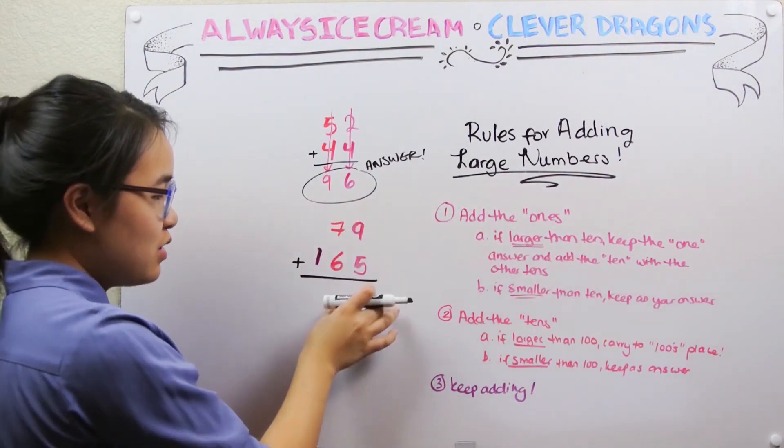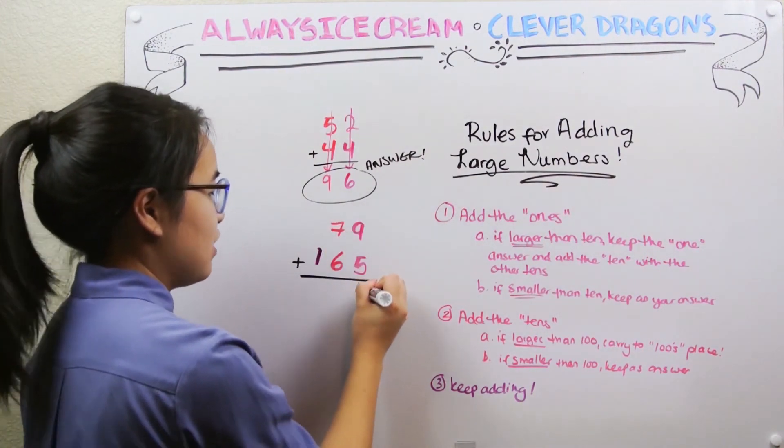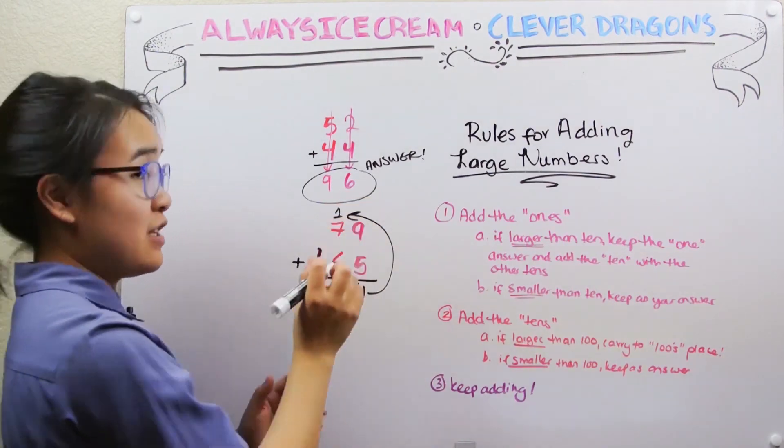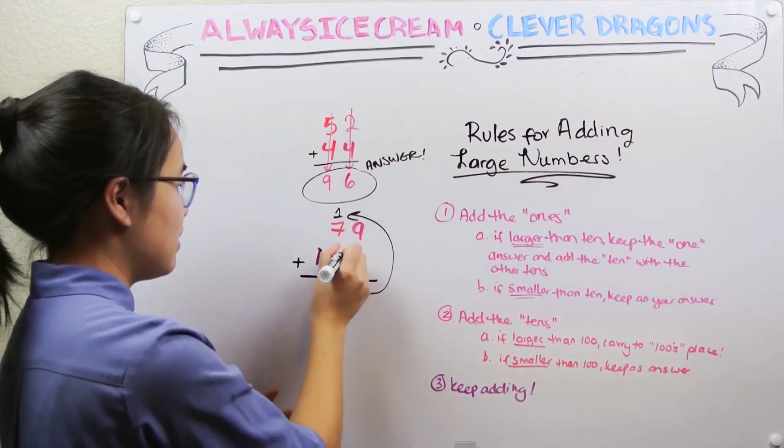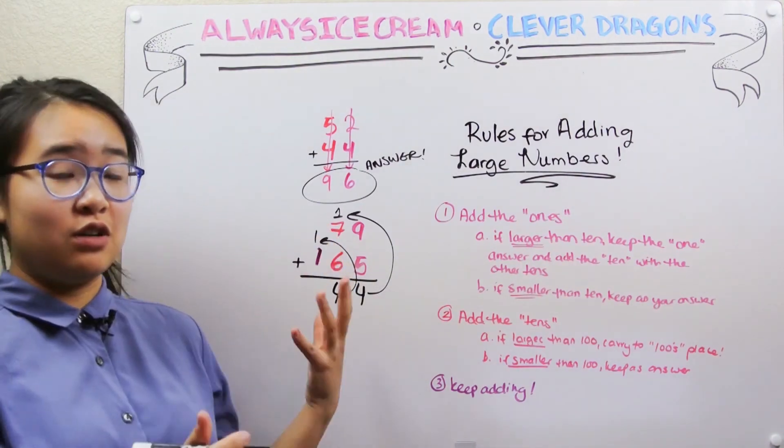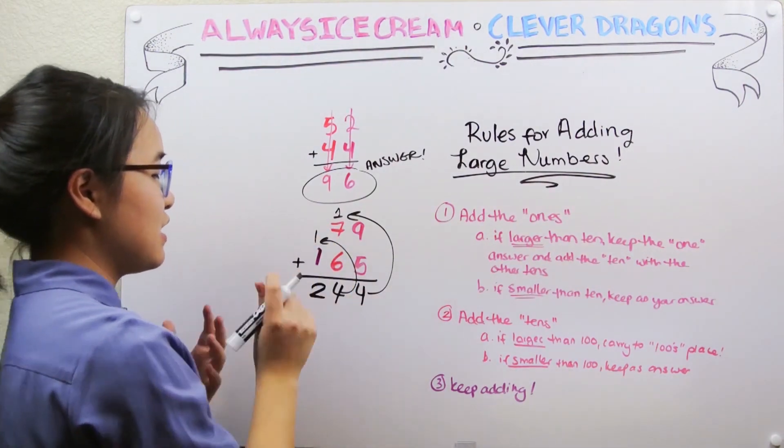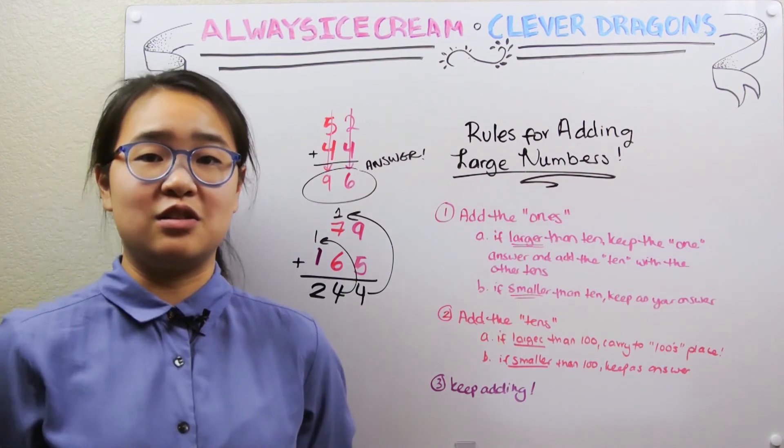If the numbers get a little too large, all you need to do is carry them over to the next unit place. So you can add the ones over here. That gets large. Just carry that over to the tens column. Add the tens up. Well, that's getting large again, so we carry it over once more to the hundreds. And you basically just keep adding and adding until you're all done.